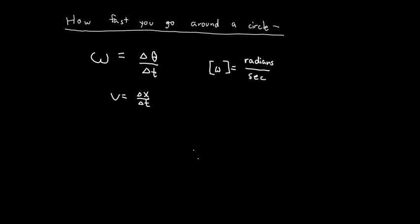We can relate angular velocity to the linear velocity we already know. The linear velocity v equals omega times r — the angular velocity times the radius of the circular path. This is how we study how fast something is going around a circle using angular velocity.